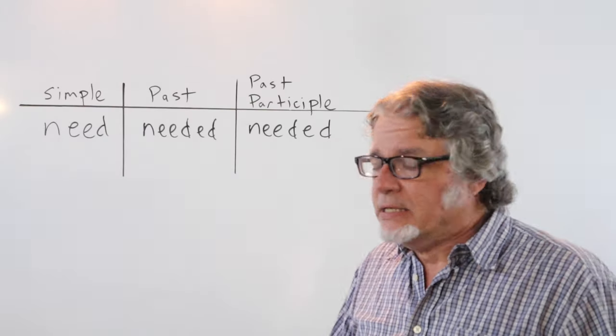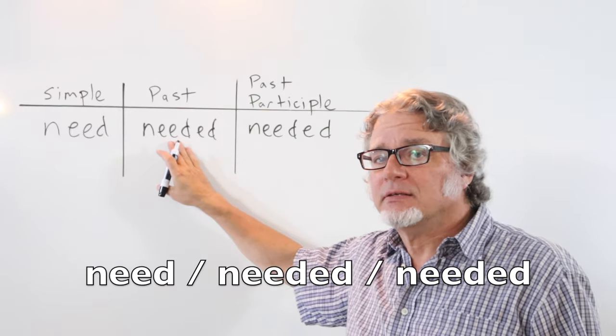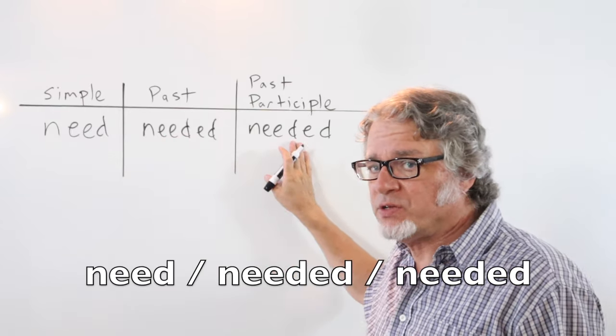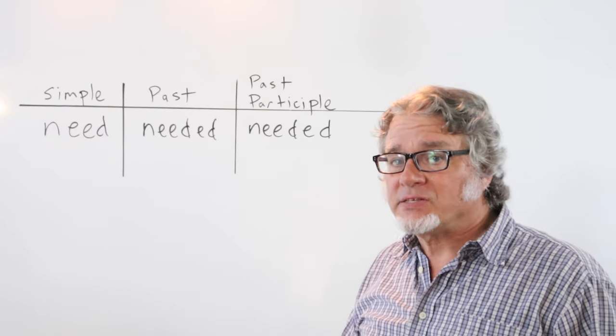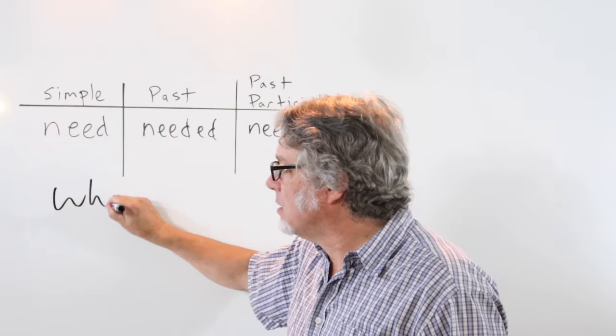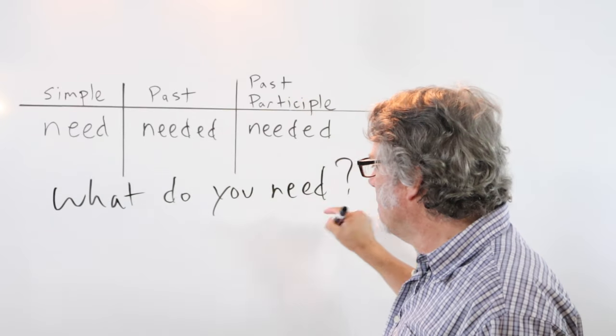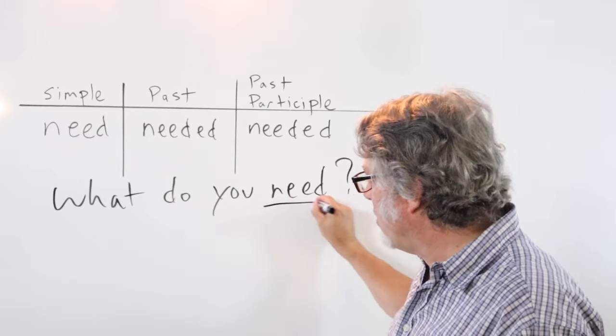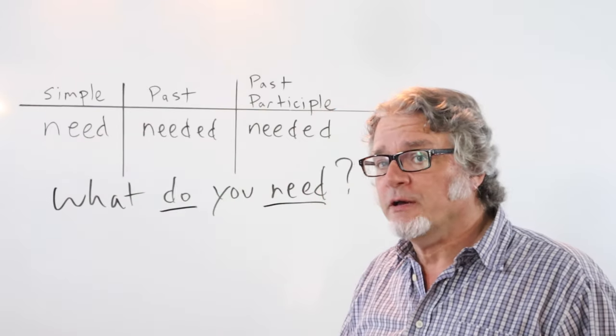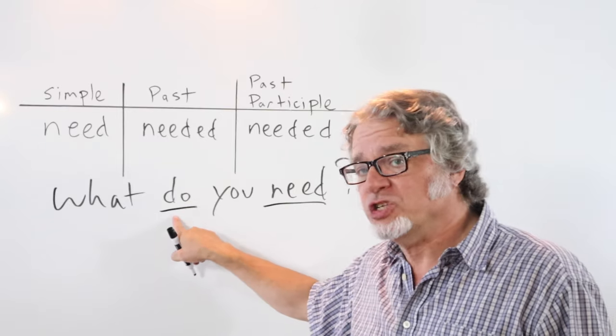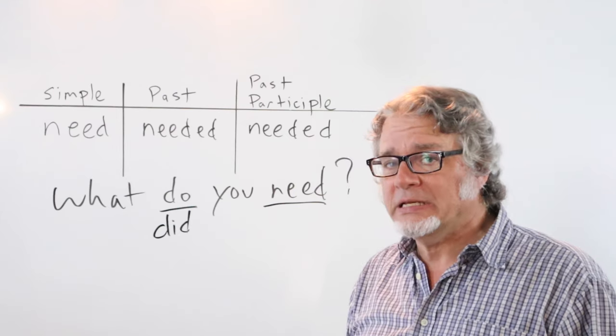Here is the verb need in the simple form. The past tense needed and the past participle needed. When asking the question, what do you need, you're using the simple form for the verb. This is the helping verb. If we put this in the past tense, you just change do to did. What did you need?